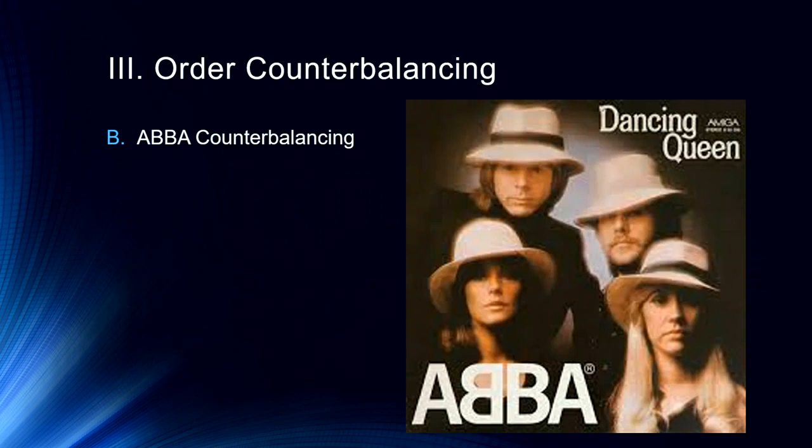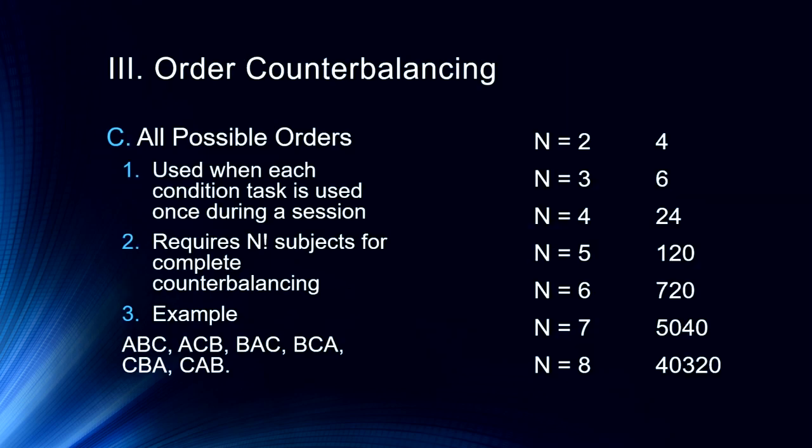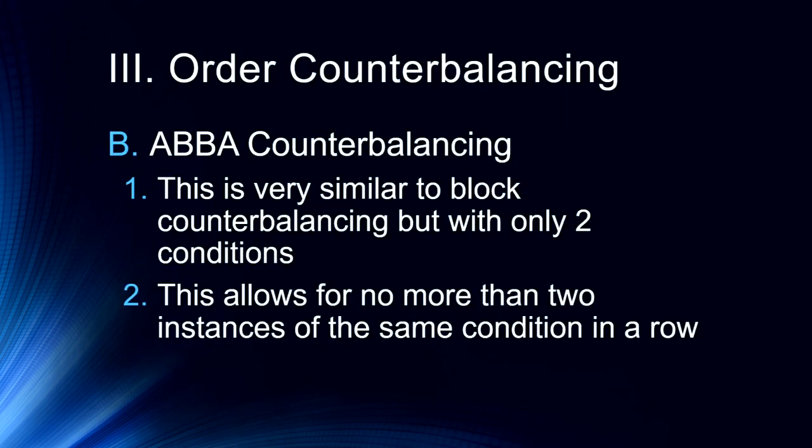ABBA counterbalancing is similar to block counterbalancing but with only two conditions. It allows no more than two consecutive instances of the same condition. We go ABBA, ABBA, ABBA — so A always comes before B and B always comes before A an equal number of times, distributing any practice or fatigue effects across the experiment. Pretty straightforward and simple.